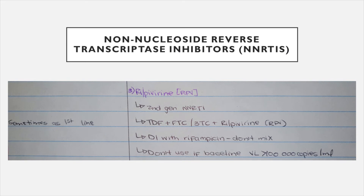Rilpivirine (RPV) is a second-line treatment, also used as a fixed-dose combination of tenofovir with emtricitabine or lamivudine and rilpivirine. Drug interactions with rifampicin are dangerous — if the patient is on TB treatment, do not mix these; either choose a different HIV regimen or a different TB regimen depending on the patient's condition. If the patient has a viral load of more than 100,000 copies, do not use rilpivirine.